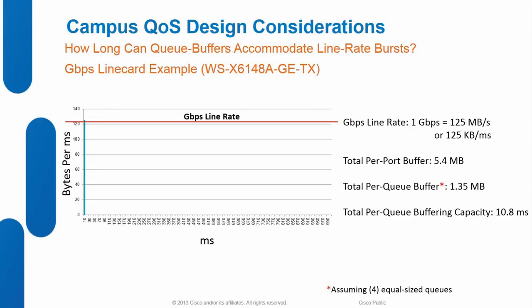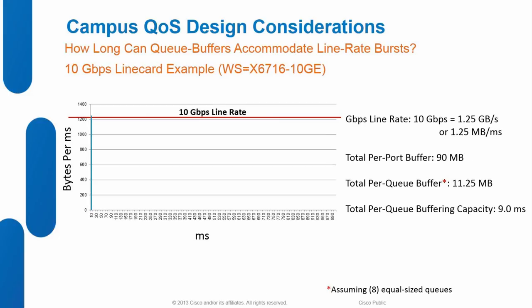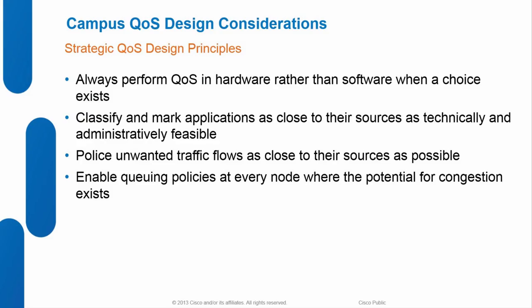It's fairly easy to oversubscribe buffers on line cards. The 6148A is a standard gig-rate line card — if you throw HD video on it, it only takes about 11 milliseconds to fill up the buffer. That's not because the buffer is undersized; it's because of the massive amount of traffic. On a 10-gig line card it's about 9 milliseconds. If we don't configure quality of service within the campus, we're going to run into packet loss on important video calls.